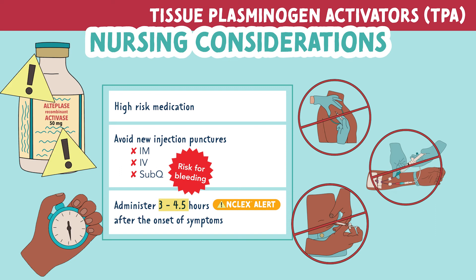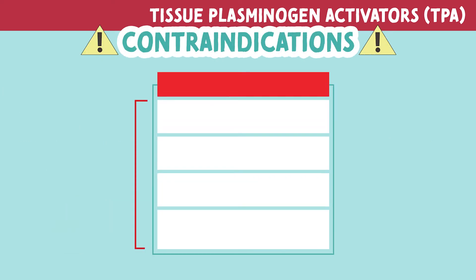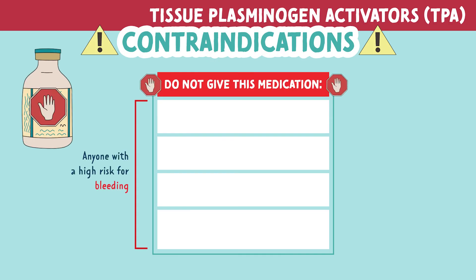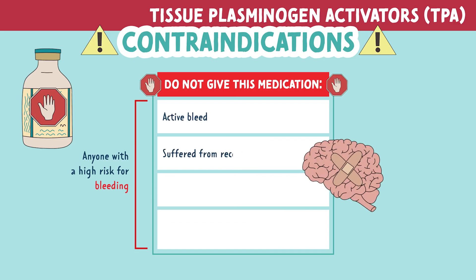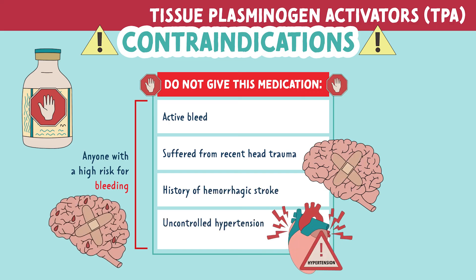Let's look at some contraindications. TPAs are contraindicated in anyone at high risk for bleeding. Do not give this medication to those who have an active bleed, a recent head trauma, a history of hemorrhagic stroke, or uncontrolled hypertension, which is anything equal to or over 180/110.